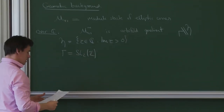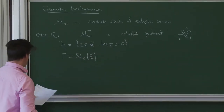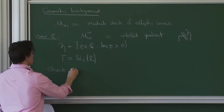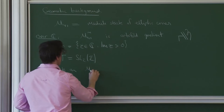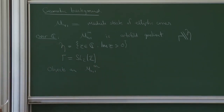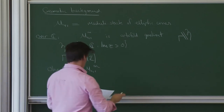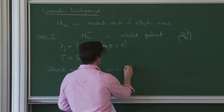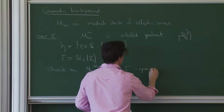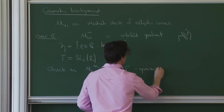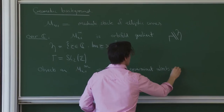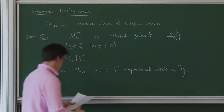We have the orbifold quotient and this is very easy to work with. Roughly speaking, geometric objects on M11 such as local systems, vector bundles and so on can be viewed as objects upstairs on H which are gamma equivariant. We'll see examples of these.